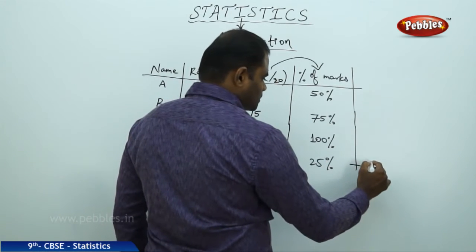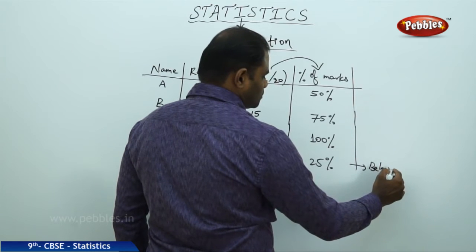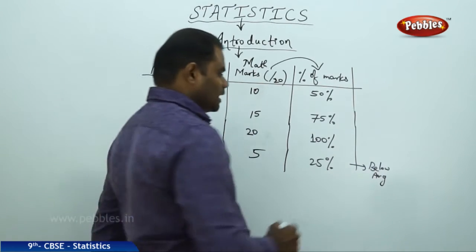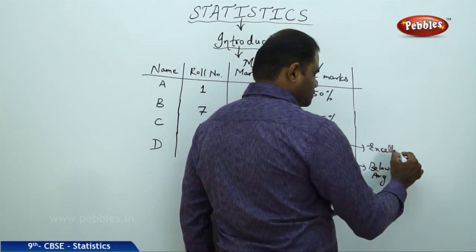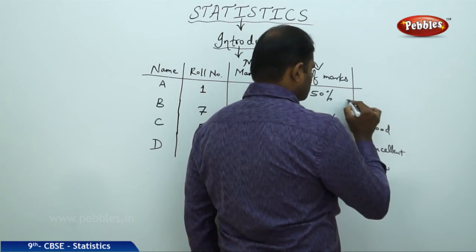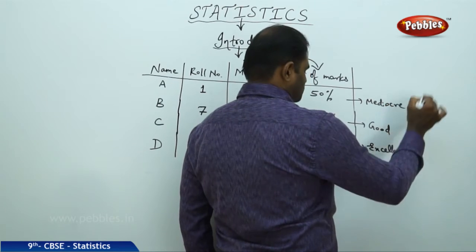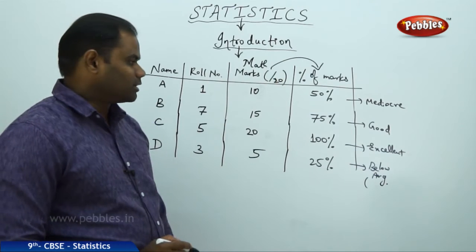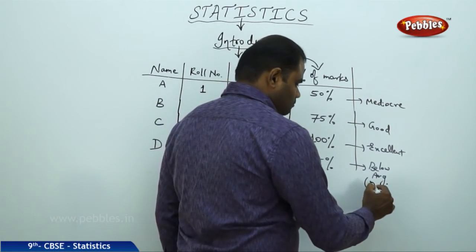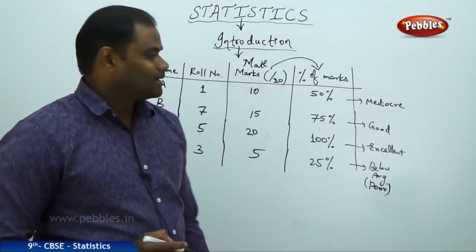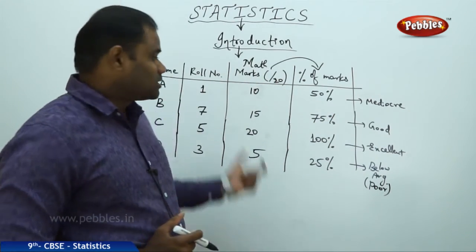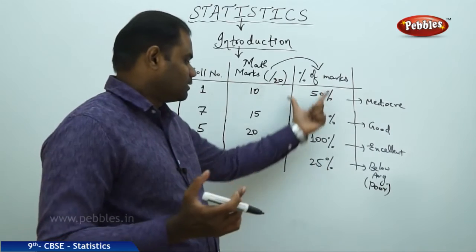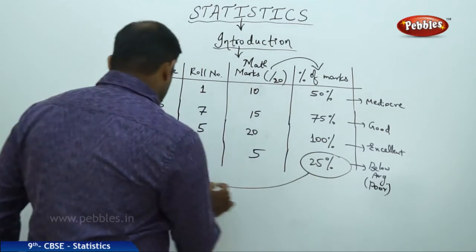This gives me a clear picture that the student who got 25% is below average or at low performance and is poor or very poor, student A is mediocre, student B is good, and student C is excellent. The teacher gets an idea with this statistical data that the marks which the students have obtained can be rectified and proper care taken for student D.